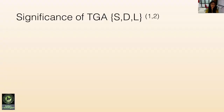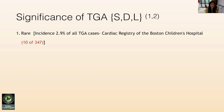The significance of transposition of great arteries with L-malposition aorta is that it is very rare in occurrence. The incidence is 2.9% of all TGA cases in the cardiac registry of Boston Children's Hospital. Secondly, because of the L-malposition aorta, the diagnosis may be confused with congenitally corrected transposition of great arteries (CCTGA).